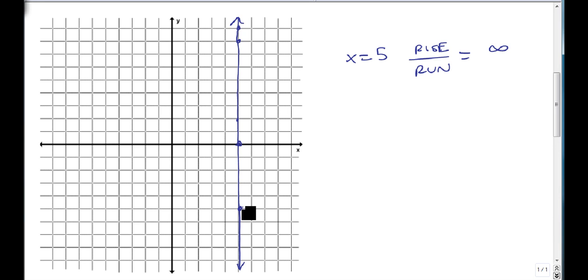Or I could go down. It could be negative. But there's no run. And I've got this 0 on the bottom. And any time I have a 0 on the bottom, we say that is undefined. And so this is a vertical line. This x equals 5 has an undefined slope. M is undefined because we divide by 0, because there is no run.